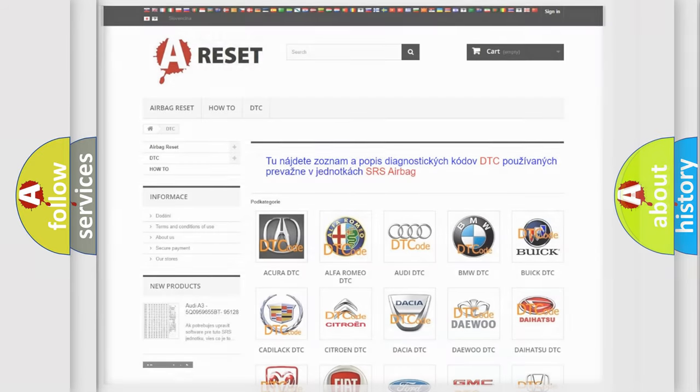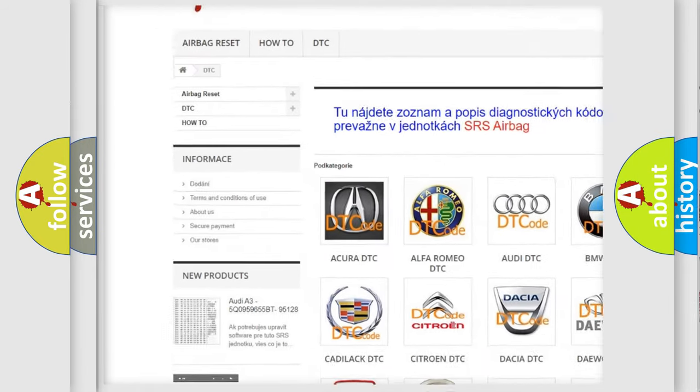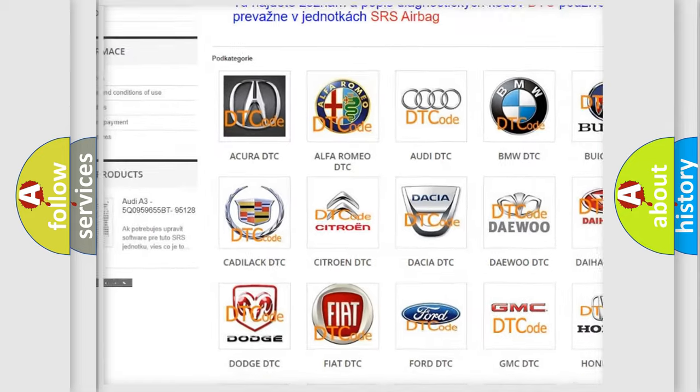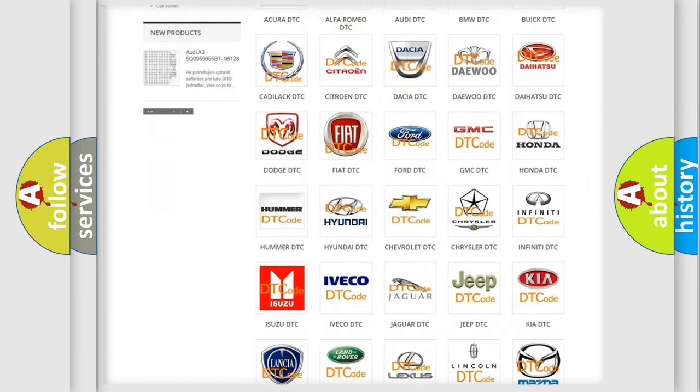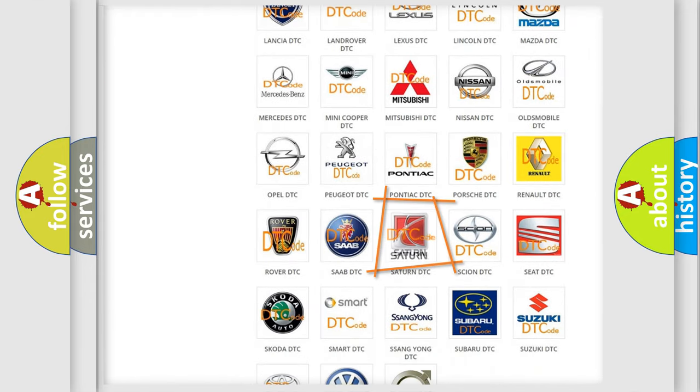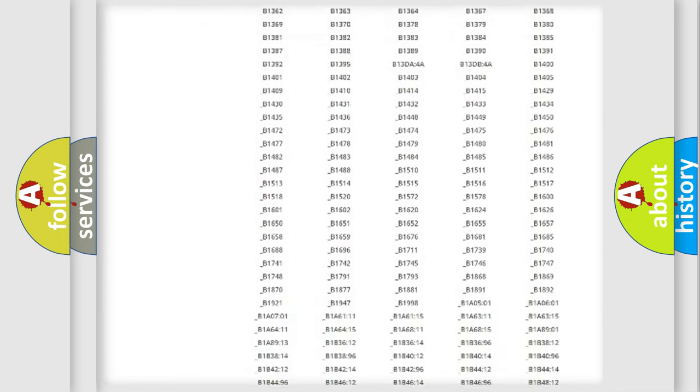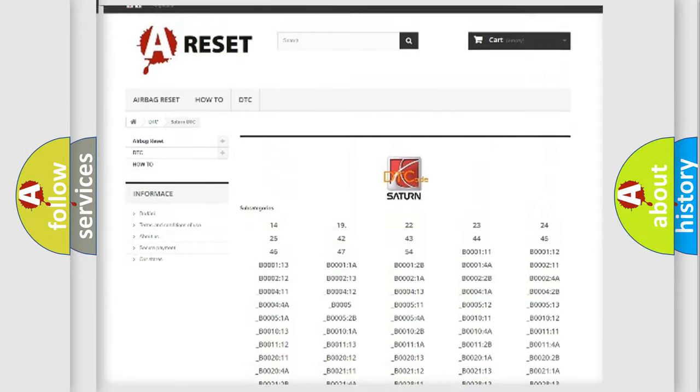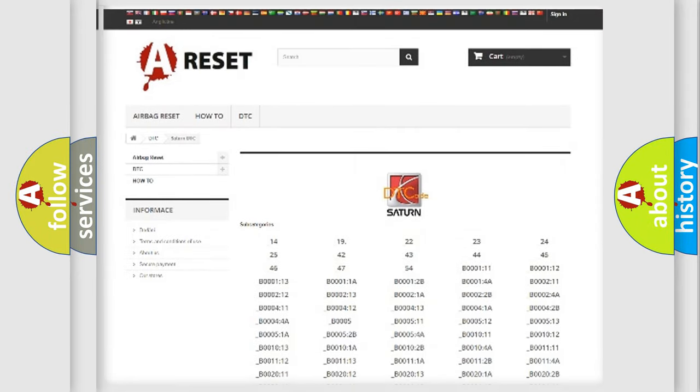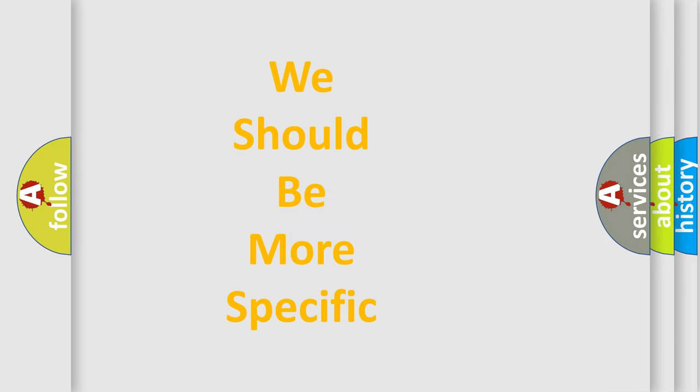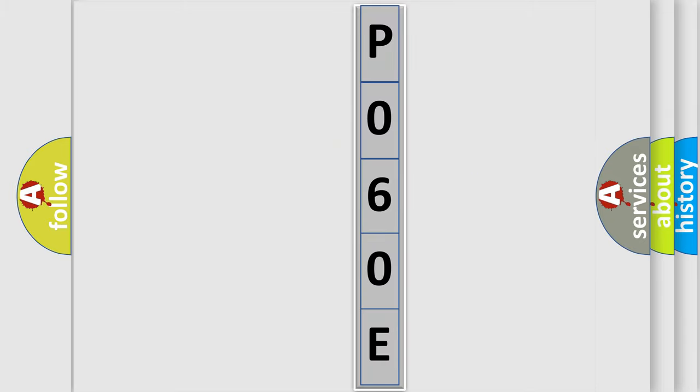Our website airbagreset.sk produces useful videos for you. You do not have to go through the OBD2 protocol anymore to know how to troubleshoot any car breakdown. You will find all the diagnostic codes that can be diagnosed in certain vehicles, also many other useful things. The following demonstration will help you look into the world of software for car control units.